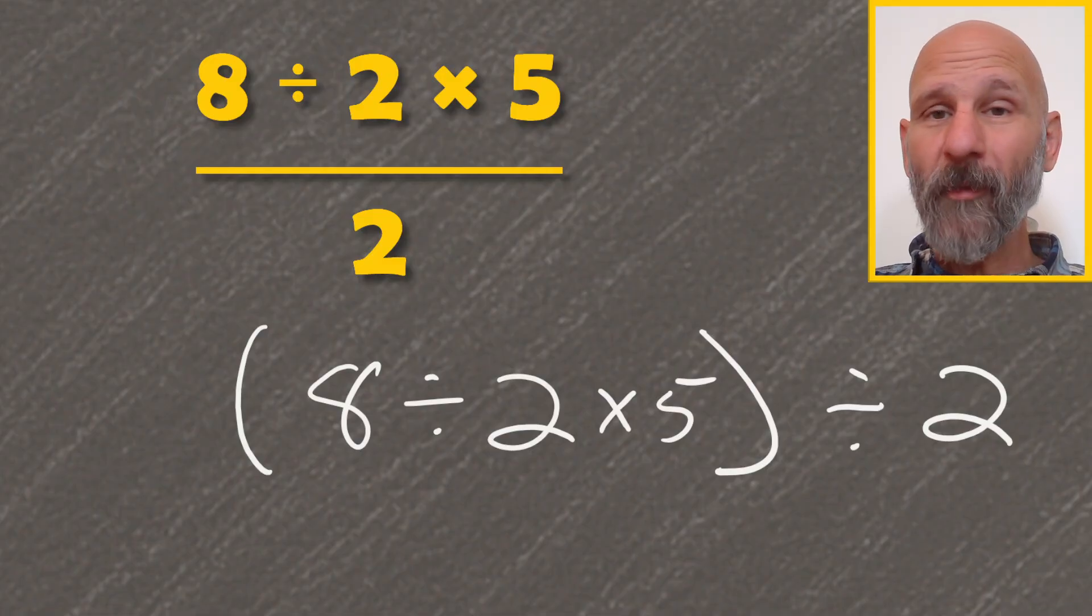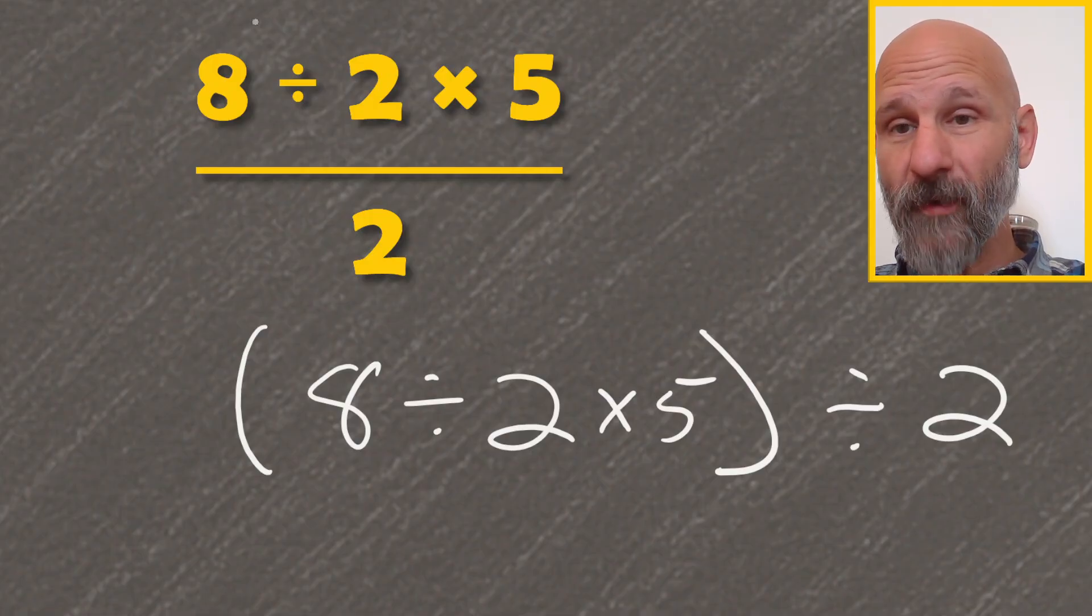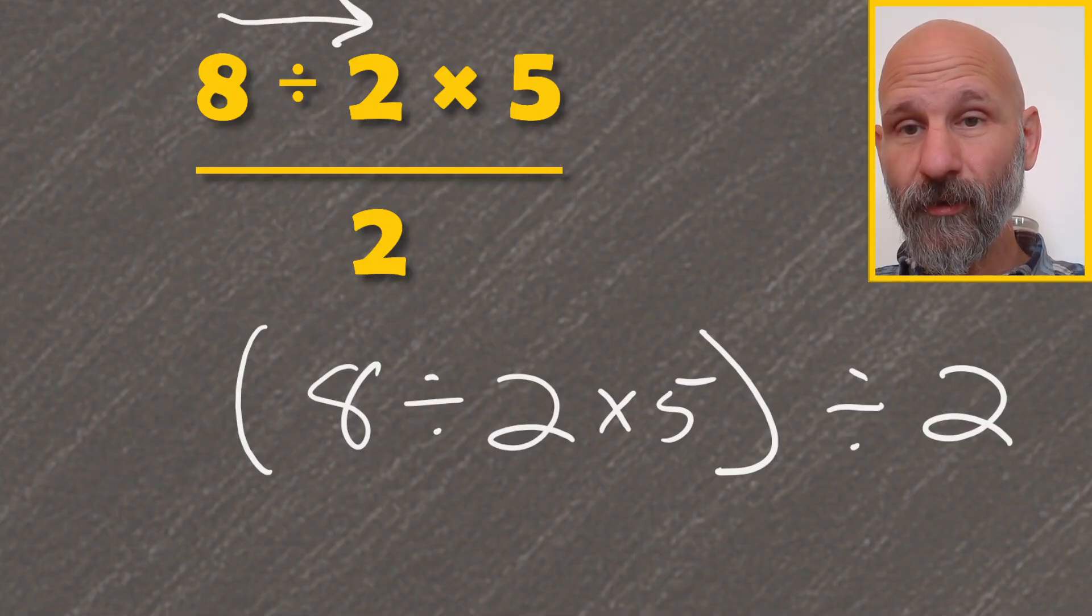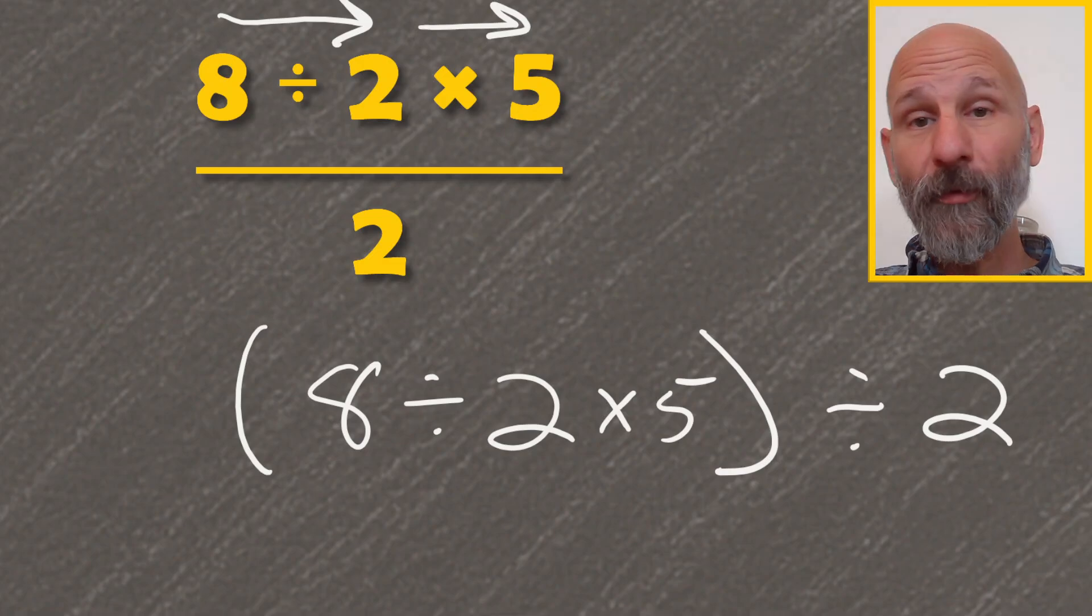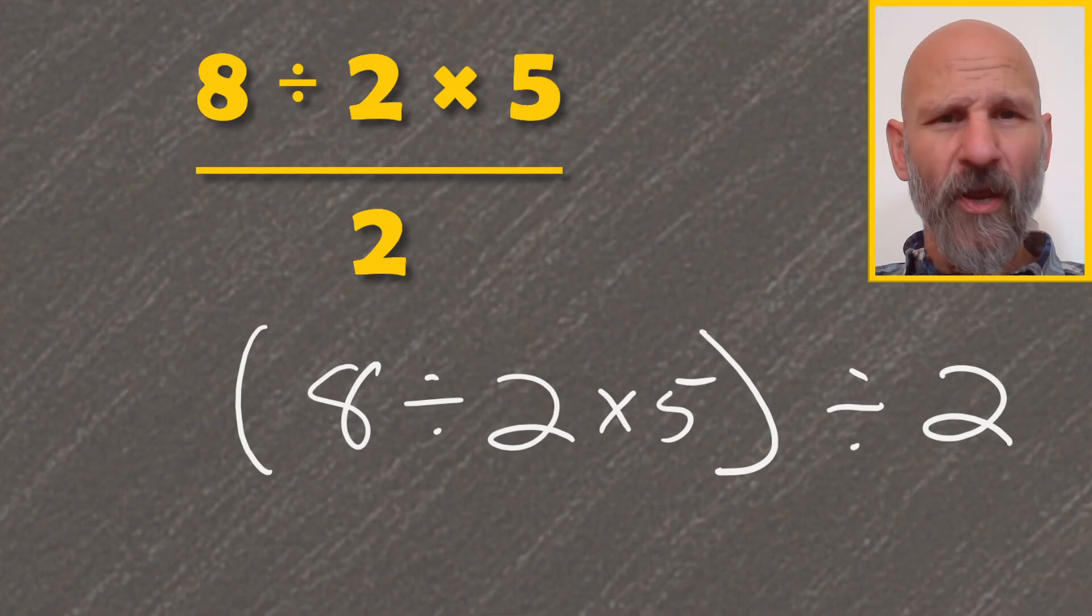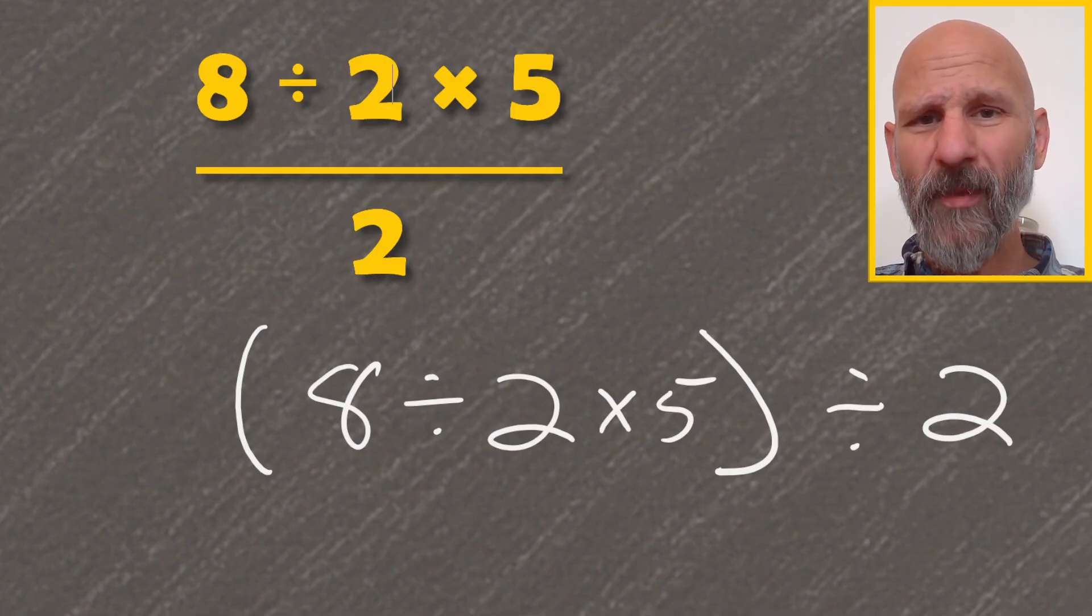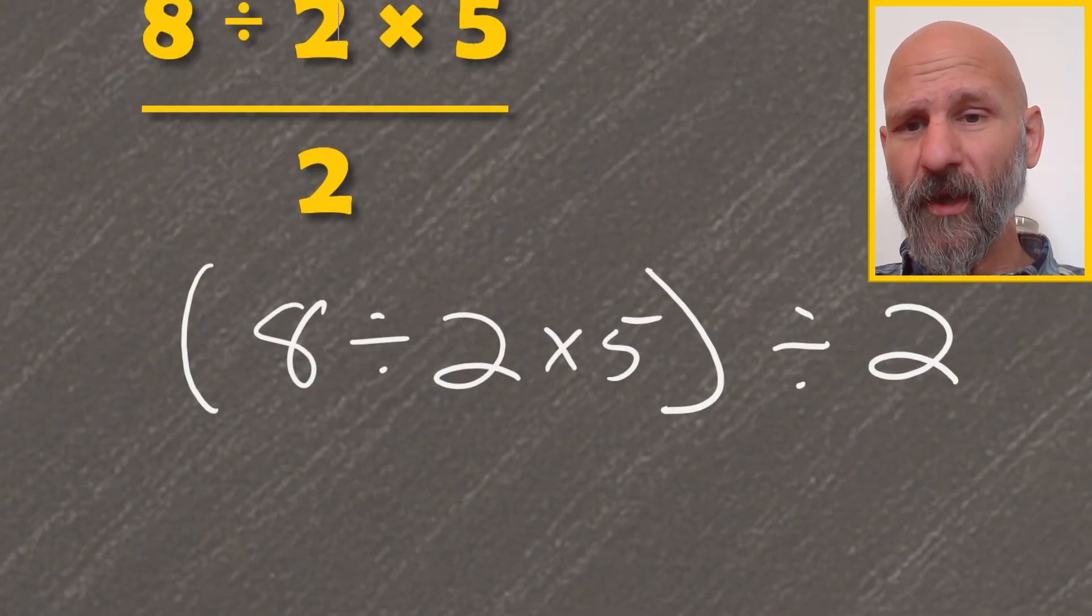So if you're working from the fraction, you can go this direction as well, 8 divided by 2 and then times 5. Or if you like it down below there where I have it written, 8 divided by 2 times 5 in parentheses, we can do either way. The steps are going to be identical. So here we go.